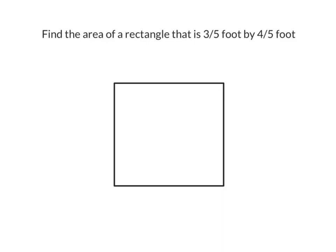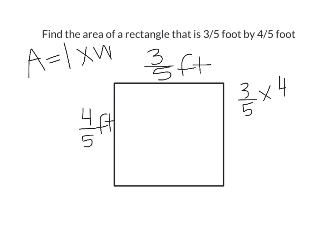Another strategy that you can use to multiply rectangles that have fractional side lengths is to use the area formula. Remember the area of a rectangle is equal to length times width. So if our given side lengths are 3/5 foot by 4/5 foot, all we have to do then is multiply our side lengths together. So this connects back to what we did in chapter 4 with multiplying fractions.